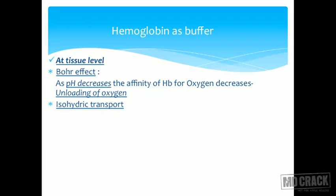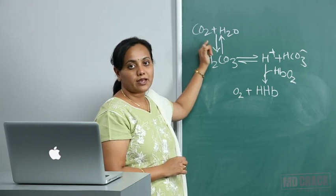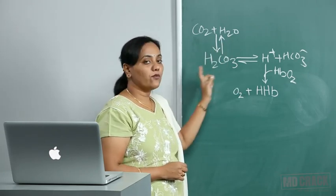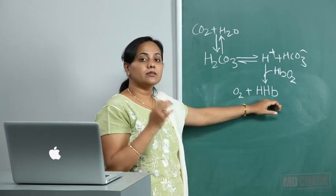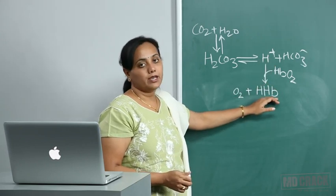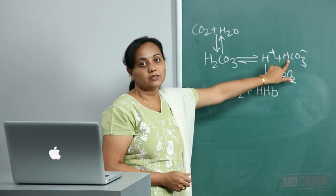There is one more thing happening called isohydric transport. 'Iso' means same — in this case it means carbon dioxide, a volatile acid, is transported in the blood without any change in pH. The RBCs contain carbonic anhydrase; all that carbon dioxide combined with water to form an acid, but that acid is nowhere to be seen — hemoglobin has buffered all that H+ — and carbon dioxide is transported as bicarbonate. So an acid is actually being transported as bicarbonate rather than as an acid, with no change in pH.